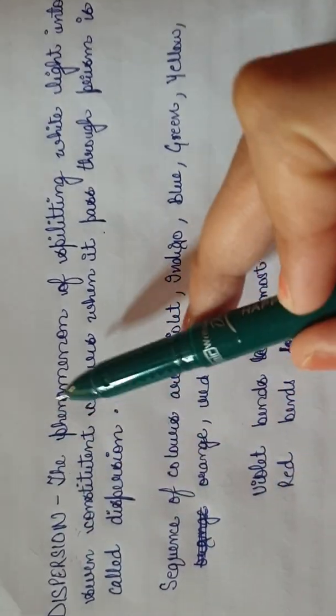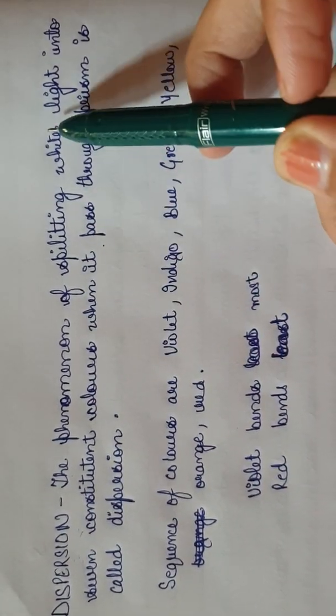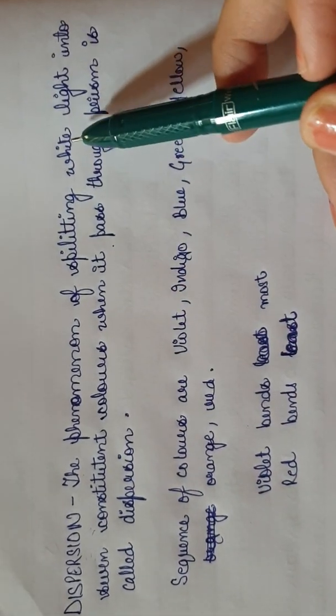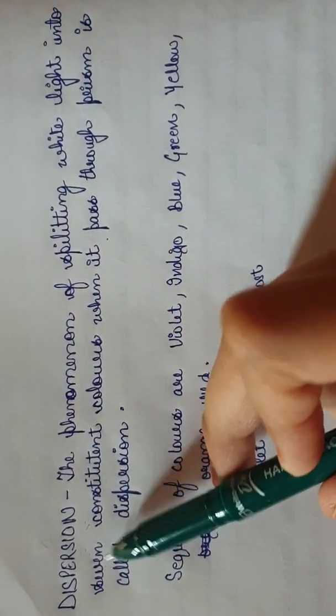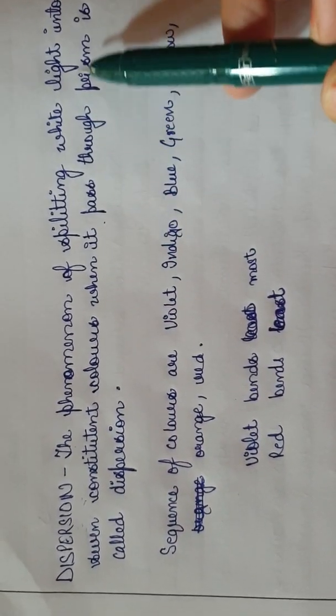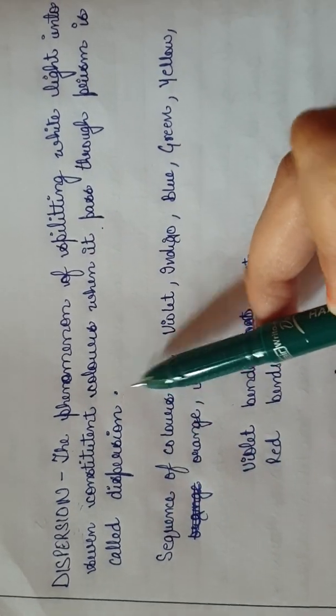Dispersion is the phenomenon of splitting white light into seven constituent colors. White light is the combination of seven colors. When it passes through a prism, it is called dispersion.